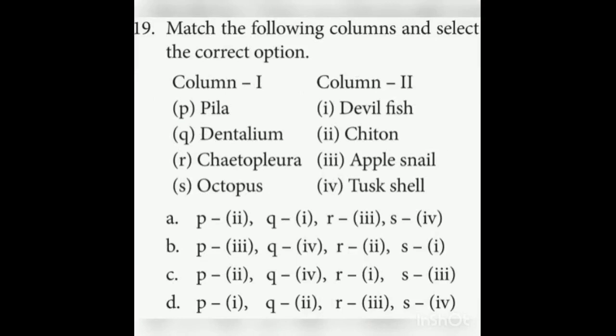Nineteenth question: Match the following columns. Pila is the apple snail; Dentalium is the tusk shell; Chiton is Chaetopleura; Octopus is the devil fish. Looking at the options, the answer is option B.